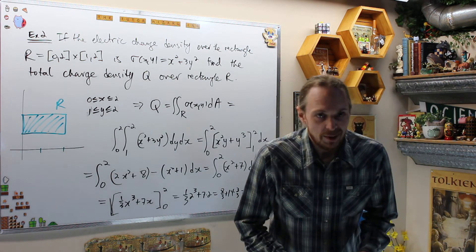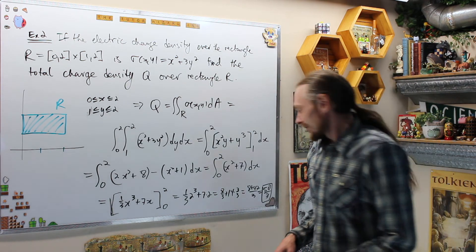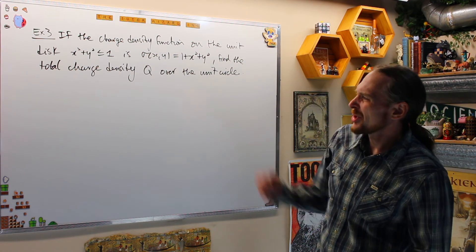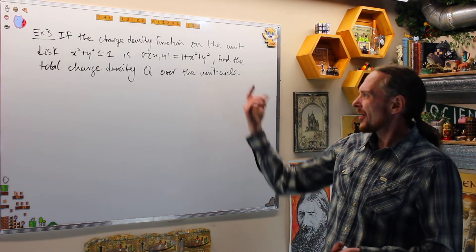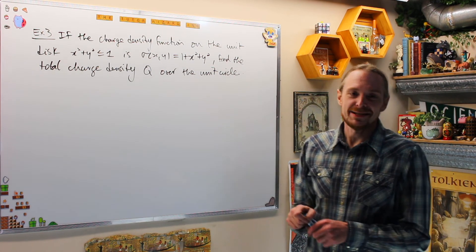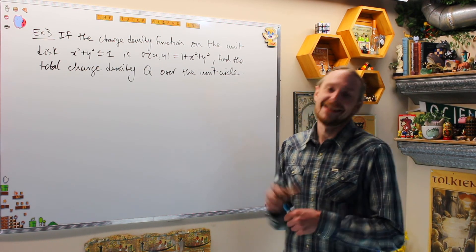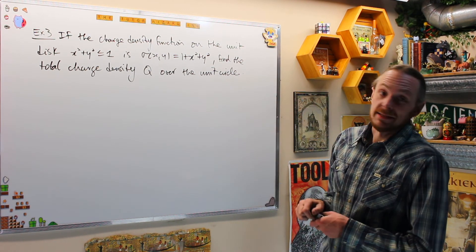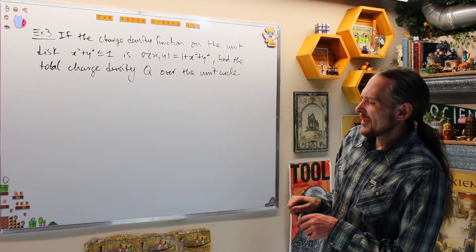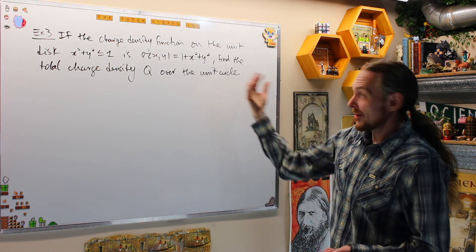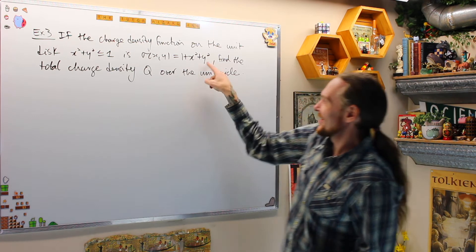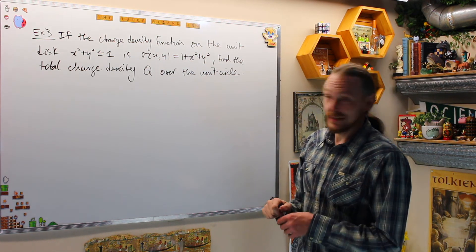Let's do one more over a polar region. We're going to find the total charge Q over a polar region using a double integral with polar coordinates. I have a charge density σ = 1 + x² + y², which is 1 + r² in polar coordinates, and it's given over a unit disc where x² + y² ≤ 1. I should definitely use polar coordinates.